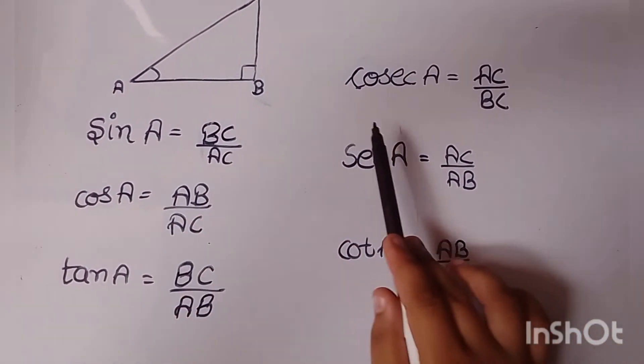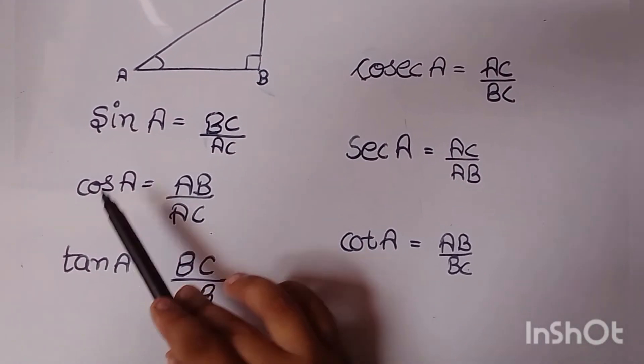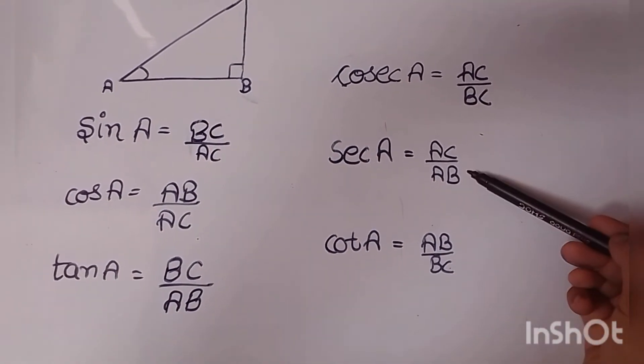Similarly, secant is the reciprocal of cosine, that is AC upon AB.